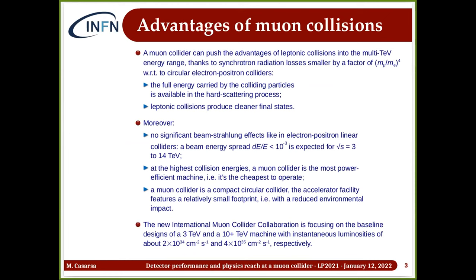What makes a muon collider so appealing is the possibility to have leptonic collisions in a multi-TeV energy range. This is mainly because the muon mass is over 200 times greater than the electron mass, so muons are less affected by cyclotron radiation losses when curved in magnetic fields by roughly a factor of 10⁹.